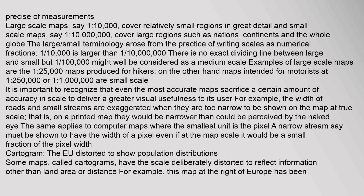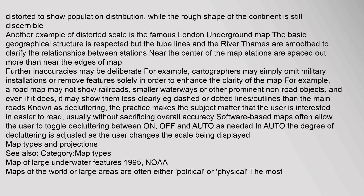It is important to recognize that even the most accurate maps sacrifice a certain amount of accuracy in scale to deliver greater visual usefulness to the user. For example, the width of roads and small streams are exaggerated when they are too narrow to be shown on the map at true scale. The same applies to computer maps where the smallest unit is the pixel. Some maps, called cartograms, have the scale deliberately distorted to reflect information other than land area or distance — for example, a map of Europe distorted to show population distribution, while the rough shape of the continent is still discernible.